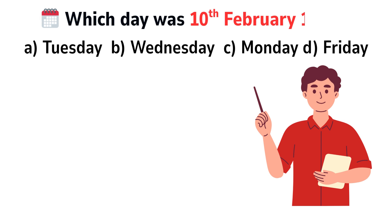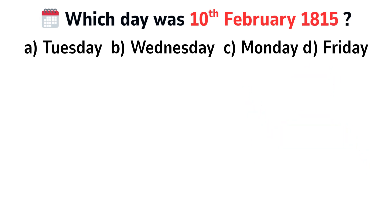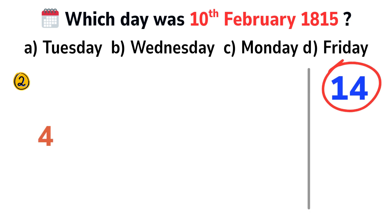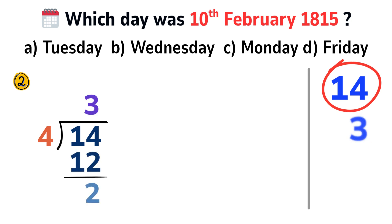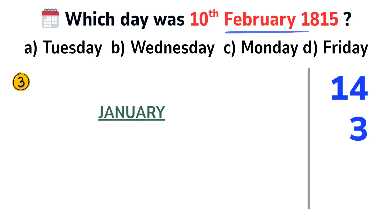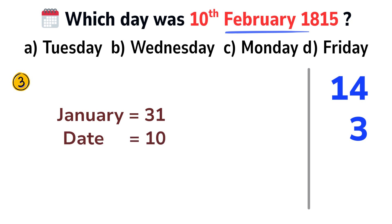Let's try another one. Which day was 10th February 1815? We apply the same steps. The last two digits of the year are 15. Subtract 1: 15 minus 1 equals 14. Divide by 4 to get the number of leap years: 14 divided by 4 gives us 3. Then find the days of months before February — January has 31 days. The date is the 10th, so we add 10, giving 31 plus 10 equals 41.